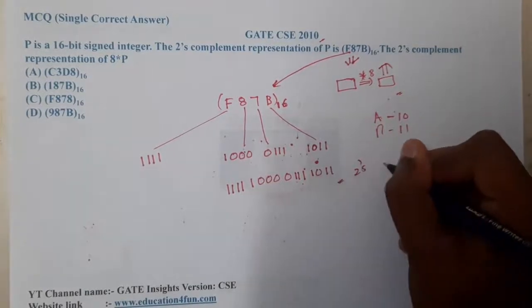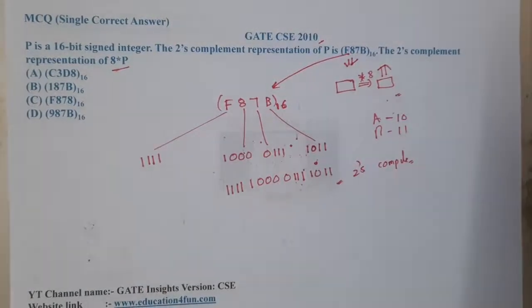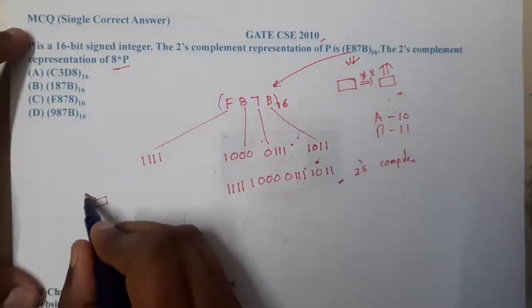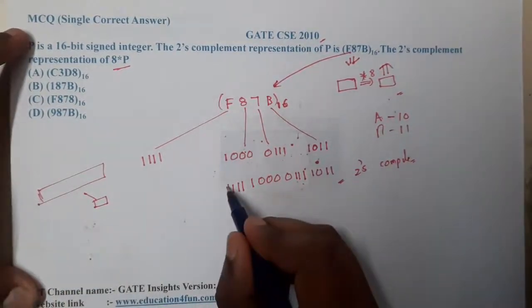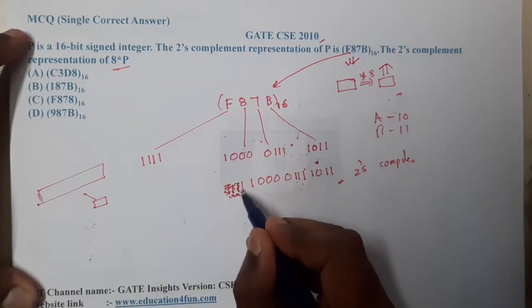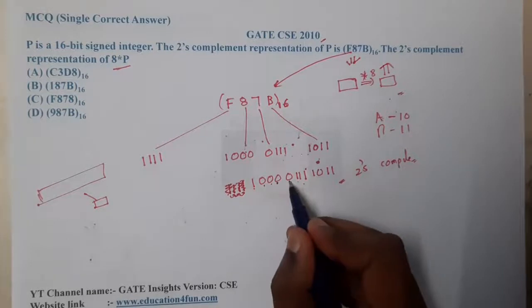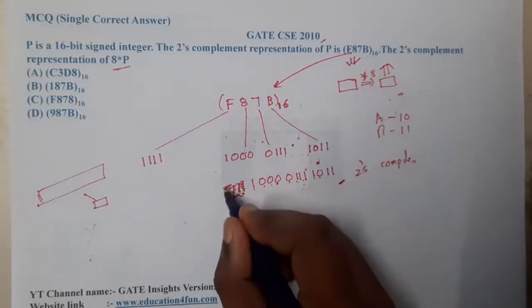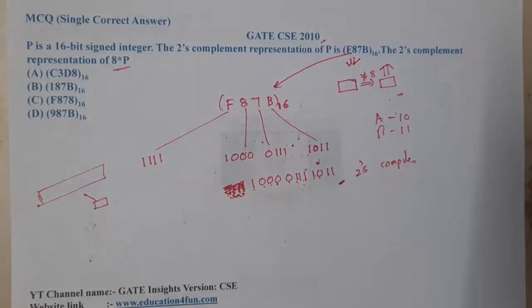This is the two's complement representation. Before trying to do multiplication by 8, do one more thing. If you recall, whenever you want to store a small size number in huge data, we do sign extensions, meaning we add some unwanted bits. The final result is 1000 0111 1011. We have added these ones just to increase the size, that is sign extension.